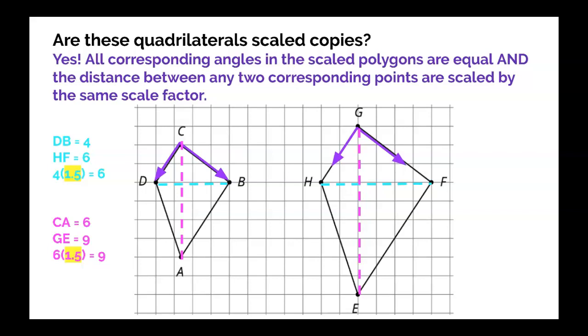We can check the vertical distances. CA has length 6, GE is 9, and 6 times 1.5 is 9. You could do this anywhere on here, and we'd always see it's multiplied by 1.5. Also, I only showed you one angle, but all four angles here are also congruent.